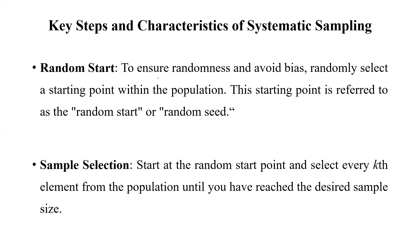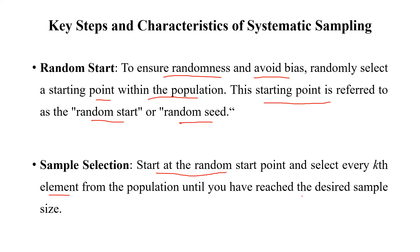Regarding random start: one of the important points to maintain randomness and avoid bias is to randomly select a starting point within the population. This starting point is referred to as the random start or random seed. Sample selection starts at the random start point and selects every kth element — where kth means the sampling interval, which may be 5, 10, or another value according to your population and sample size — until you have reached the desired sample size.